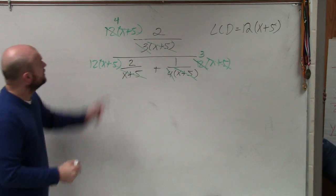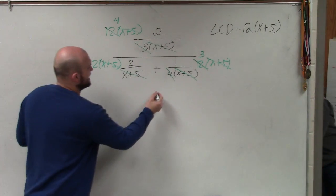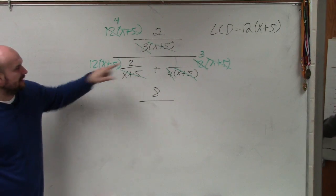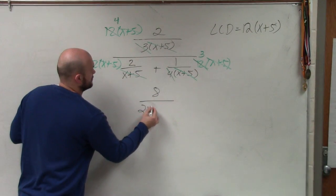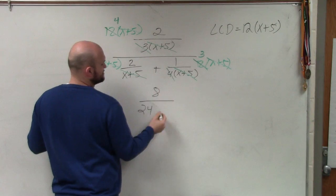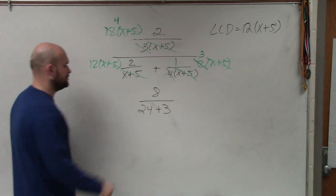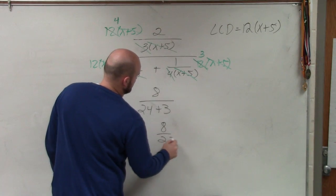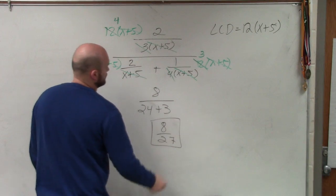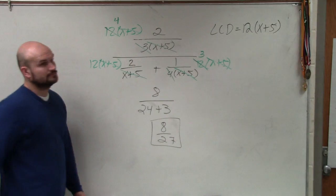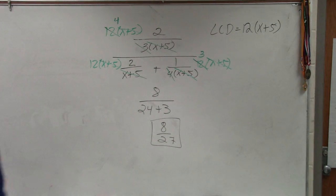So now what I'm left with is 4 times 2, which is 8, over 12 times 2 is 24, and this just becomes plus 3. Now can I add 24 and 3? Yeah, of course you can. That's it, it's that easy. See how easy that is?